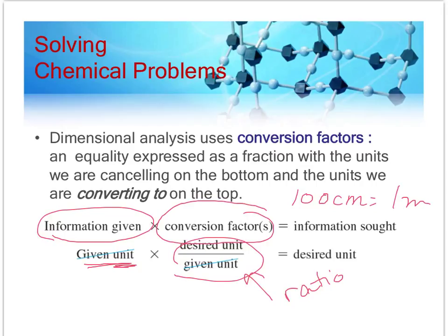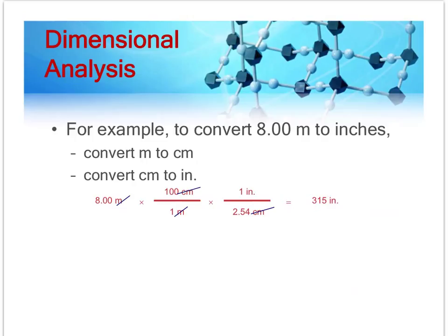For example, you might say 100 centimeters equals 1 meter. So you'd arrange it like a ratio instead of an equality. Okay, so for example, let's say that we were asked to convert from 8 meters to inches. And so 8 meters would be our given information. And always start the problem with your given information. Make sure you include your units.